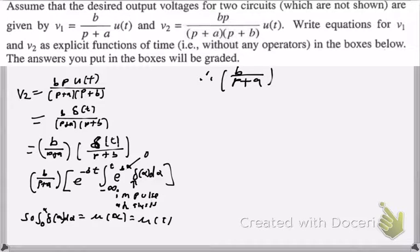Therefore, we can rewrite the equation again to get B over P plus A times the exponential function, which we got from our last equation, E to the negative BT times the integral, which ended up being the unit step function. So, we multiply this by the unit step function.